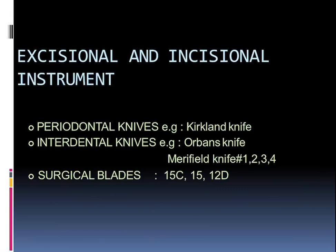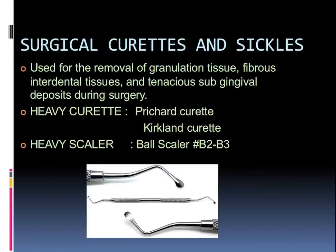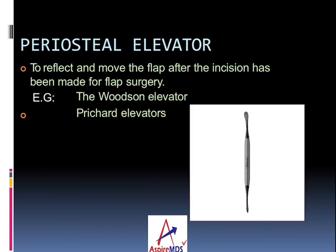The surgical blades used may be 15C and 15, which are used for normal oral surgery or periosteal flap surgeries. Blade 12D has a C-shaped curve and is used mainly in mucogingival surgeries. Surgical curettes and scalers are used for removal of granulation tissue, fibrous interdental tissue, and tenacious subgingival deposits during surgery. Heavy curettes like the Prichard and Kirkland curette and heavy scalers like ball scalers are used for surgeries.